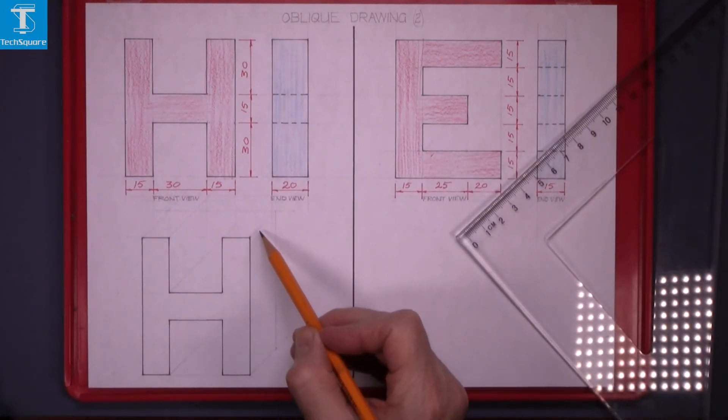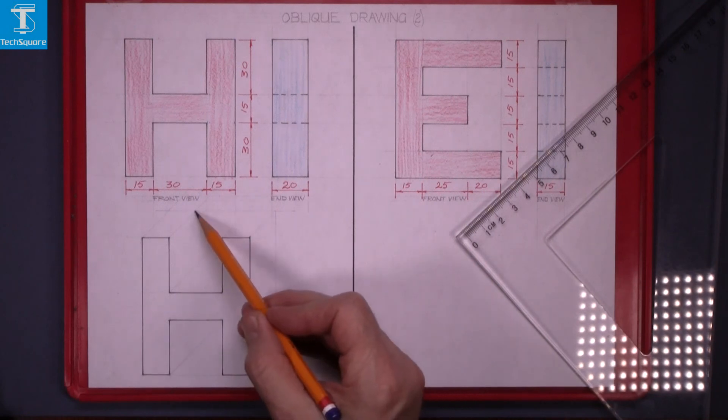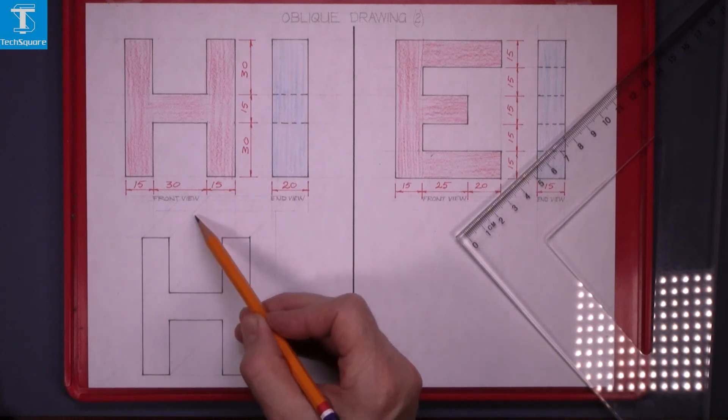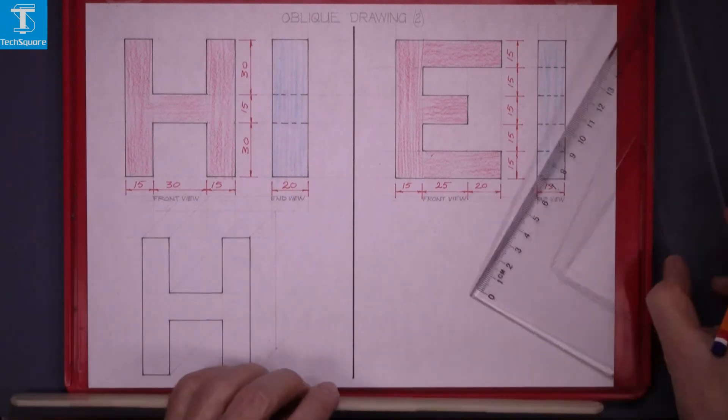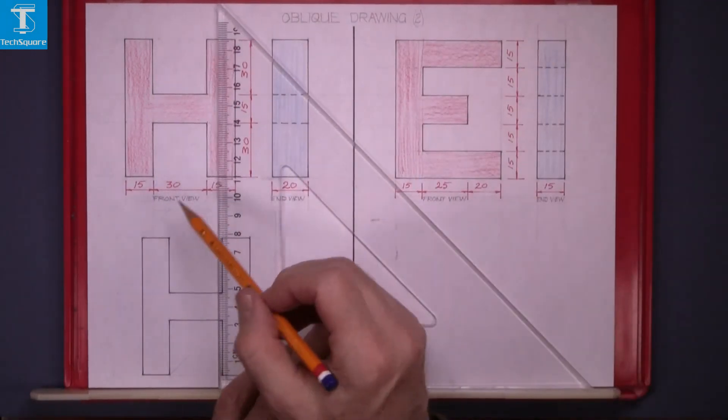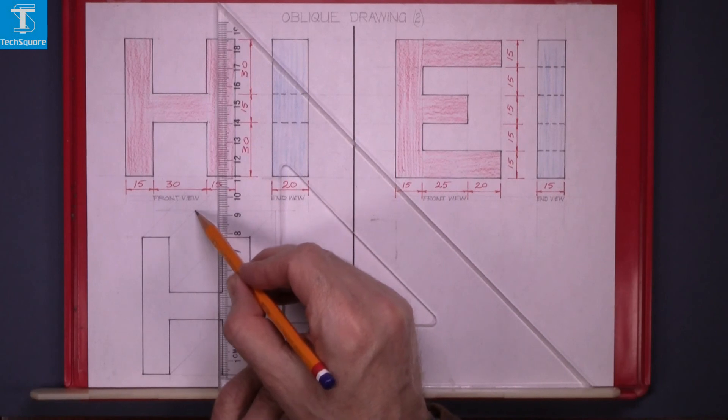That gets you the top of the letter H there and the top of the other leg over here. That back point brought straight down gets us the inside of that left leg there.